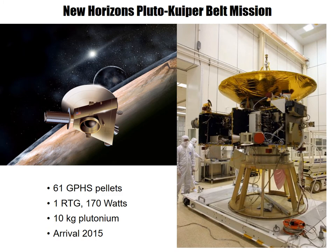Another example of a space mission utilizing plutonium-238 is the New Horizons mission that arrived at the Pluto-Kuiper Belt. It had around 10 kilograms of plutonium with one RTG and a number of heat sources. Plutonium-238 is a reliable material for generating heat, and this heat can also be used to generate electricity for unmanned space missions. In the United States, there are current efforts to renew the ability to produce plutonium-238 for further NASA missions.